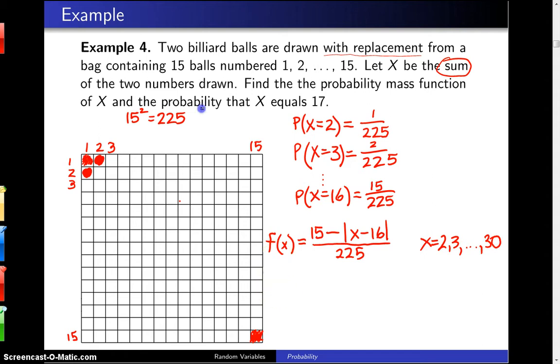Finally, the question asks for the probability that X equals 17. And to find the probability that the random variable X takes on the value 17, you simply find little f of 17. When you plug 17 into here, you get the absolute value of 17 minus 16, which is 1, 15 minus 1 is 14, so the answer is 14 divided by 225.